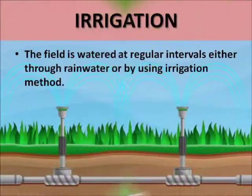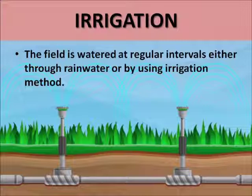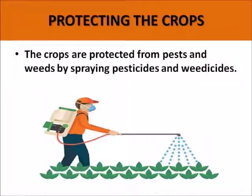The next stage is irrigation. The field is watered at regular intervals either through rainwater or by using irrigation methods. There are various irrigation methods like the sprinkler system or drip irrigation, which you are going to study in more detail in higher classes.